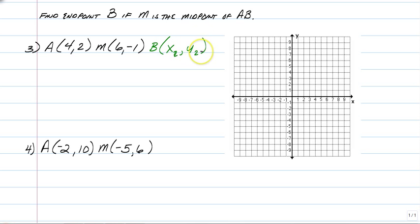So all we have to do is use the formula. So we would have 4 plus x2 over 2, comma 2 plus y2 over 2. And that would give us our midpoint, 6, negative 1.